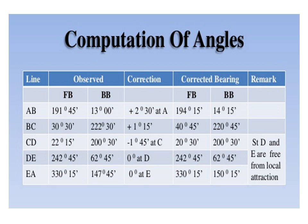Initially, if you consider the line DE, you will observe that the difference between the fore bearing and back bearing is exactly 180 degrees. Therefore, correction at D is 0 degrees, meaning stations D and E are free from local attraction. Therefore the readings taken from D as well as E are correct, and the corrected fore bearing and back bearing of line DE are correct. Since the fore bearing of EA is taken from station E, the corrected fore bearing and observed fore bearing of line EA are also correct.